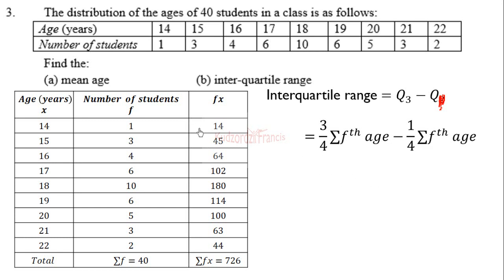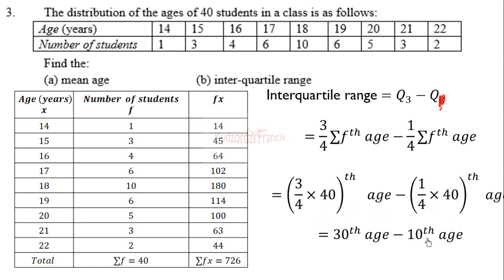So we need to do three-quarters of the frequency, which is 3/4 × 40, the total frequency, and one-quarter of the 40. That will give you the 30th age and the 10th age.